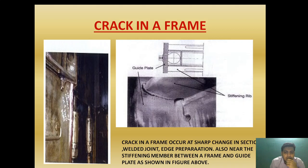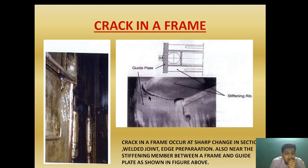Cracks in the A-frame occur at the stiffening ribs and at changes in the cross-section area, which act as stress raisers. Cracks occur at sharp changes in section, welded joints, edge preparations, and near the stiffening member between the A-frame and guide plate. Poor weld penetration combined with vibration over a running period can cause breakdown, so timely inspection must be carried out to ensure the A-frame structure remains crack-free.